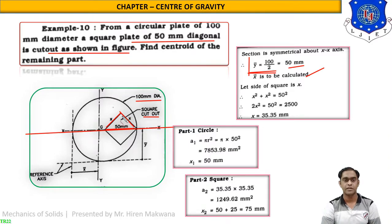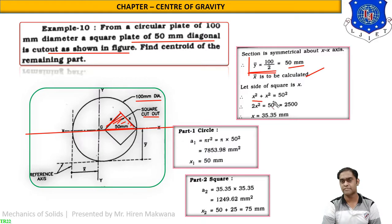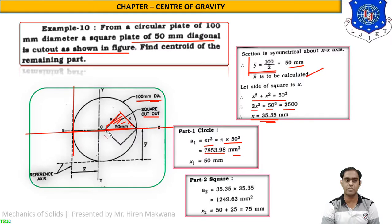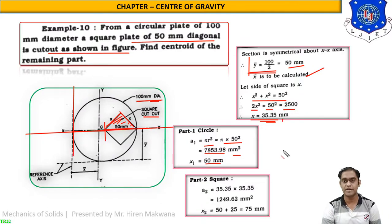For the square, using the Pythagorean theorem on the right-angle triangle: x² + x² = 50², so 2x² = 2500, giving x = 35.35 mm. For part 1 (the circle): radius = 50 mm, A1 = πr² = π × 50² = 7853.98 mm². The CG of the circle from the y-axis is at the radius, so x1 = 50 mm. For part 2 (the square): area A2 = x × x = 35.35² = 1249.62 mm².